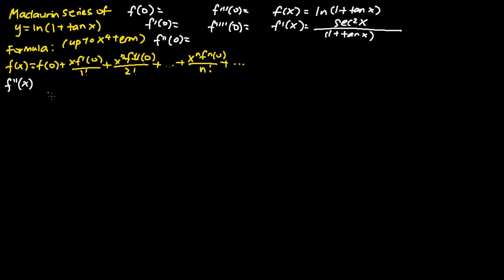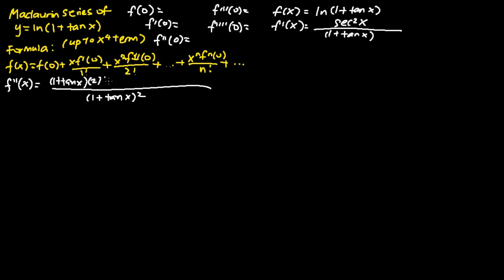Next, to find f''(x), I differentiate f'(x) one more time. In the denominator, I square (1 plus tangent x). In the numerator, I have (1 plus tangent x) and then I differentiate sec squared x to get 2 times sec x times sec x times tangent x, subtracting away — I keep sec squared x as it is and differentiate (1 plus tangent x) to get sec squared x.